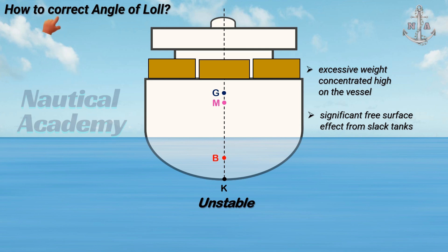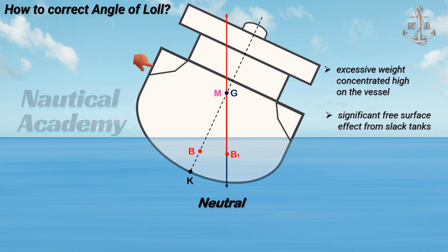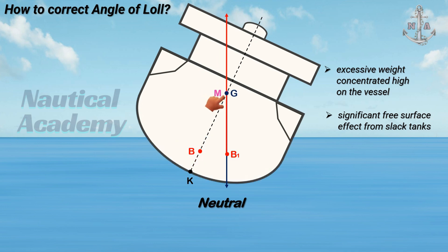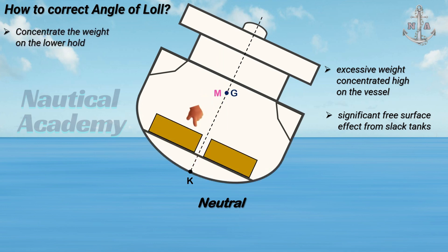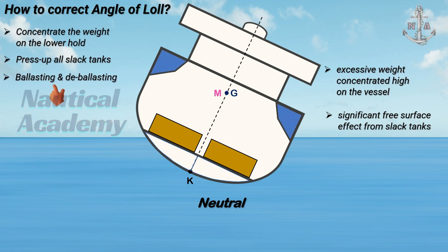This video will focus specifically on how to correct the angle of loll. Once we have identified that the ship's inclination is due to loll, the immediate action is to lower the ship's center of gravity. One way to achieve this is to concentrate the weight on the lower hold. Another approach is to press up all slack tanks — partially filled tanks should be topped up to eliminate the virtual rise of the center of gravity. The common method to correct the angle of loll is through ballasting and de-ballasting.